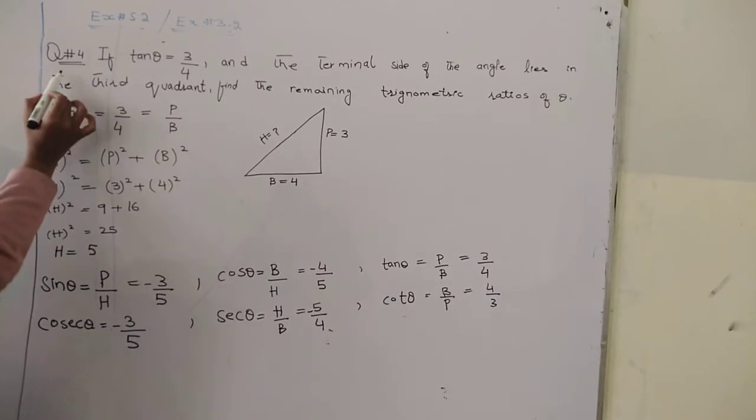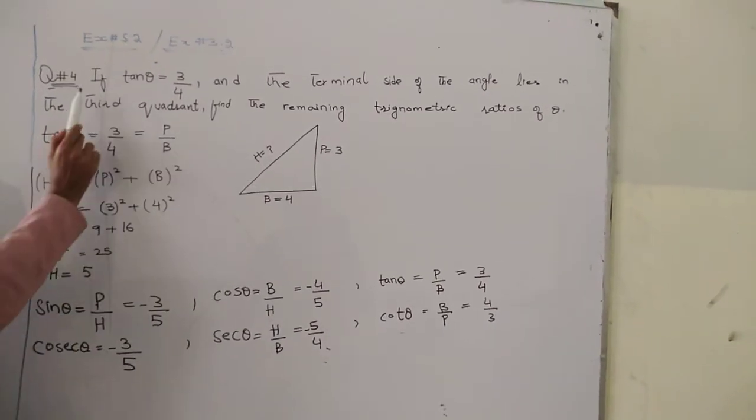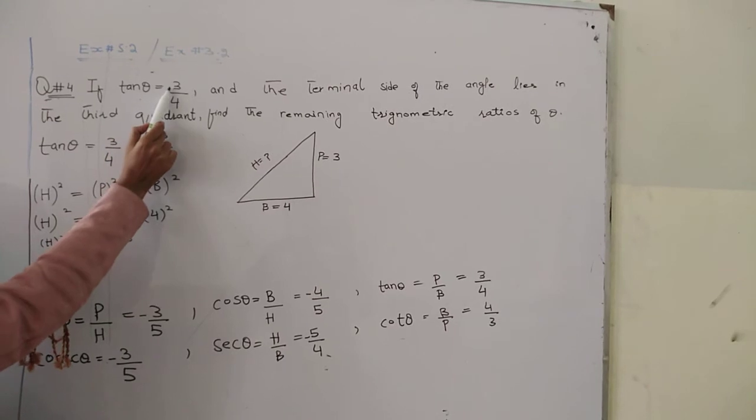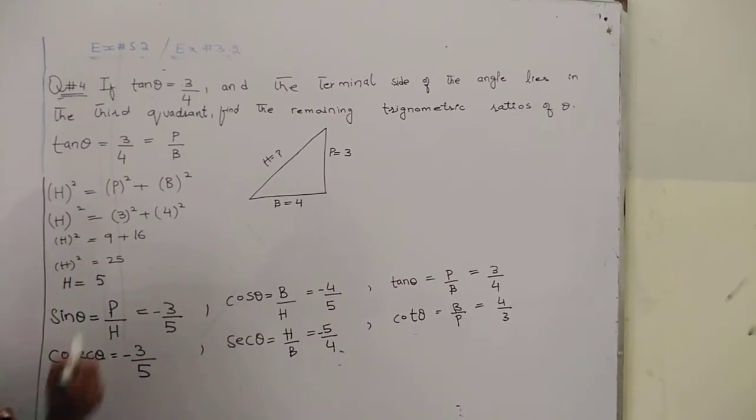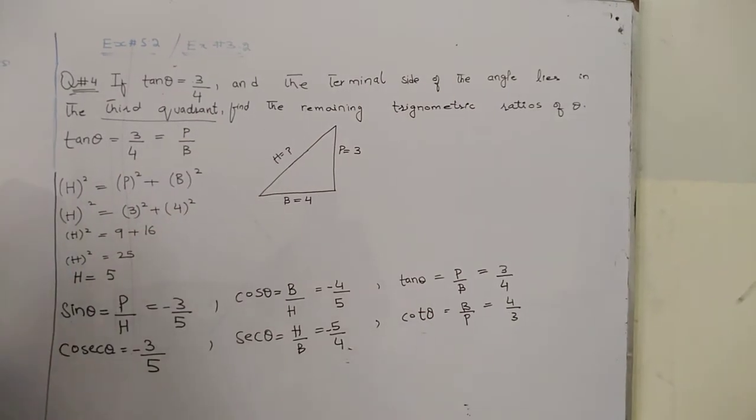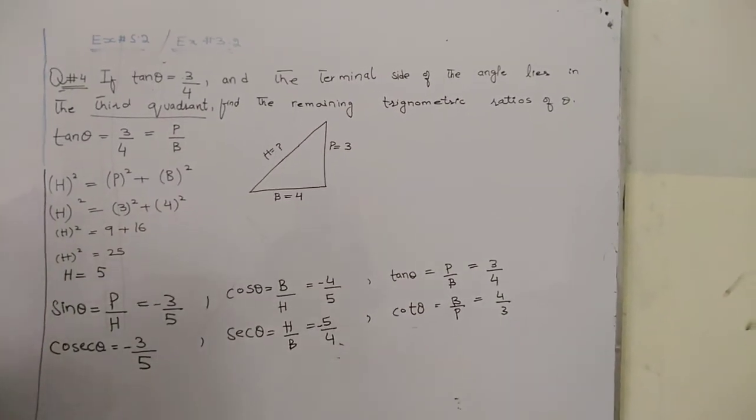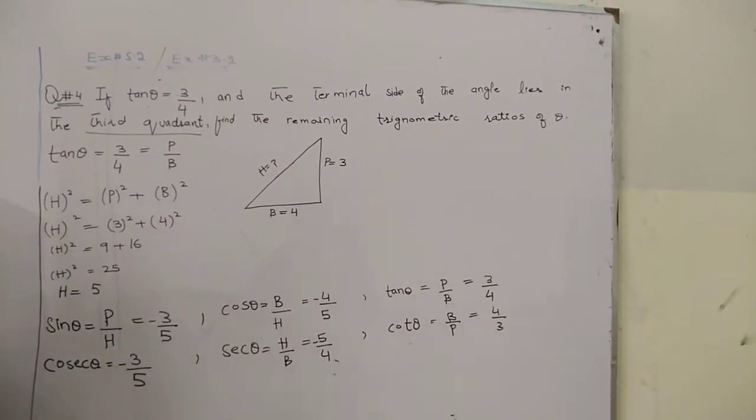Next up is question number 4. In question number 4, we can see if tan(theta) is equal to 3/4 and the terminal side of the angle lies in the third quadrant. What do you do? You can find the different trigonometric ratios.